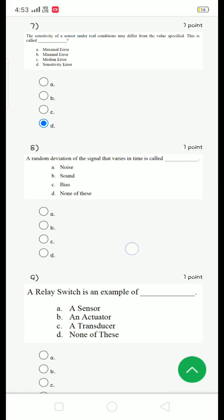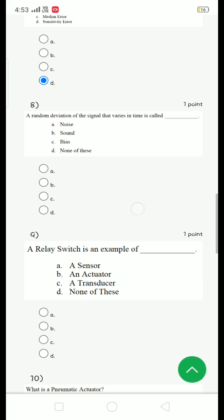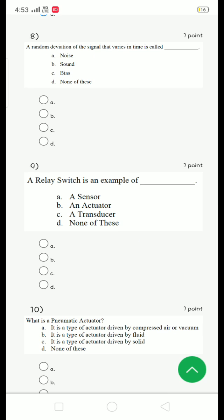Moving on to the eighth question. A random deviation of the signal that varies in time is called option A, noise.